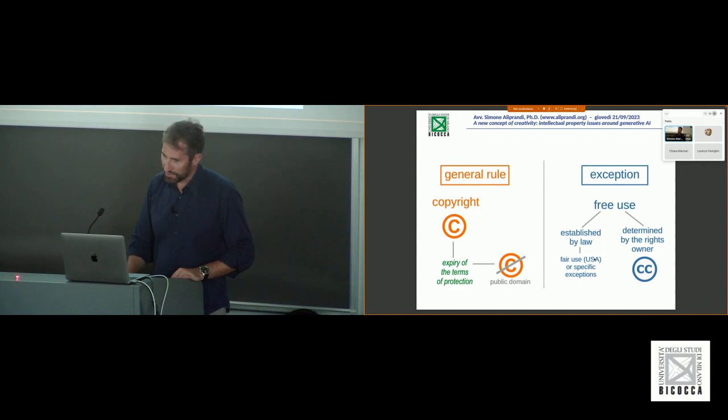If we want to have some gray scale, we have to look to the other part of my diagram with the exceptions. So the exception to the general rule is the free use, and this free use can be based on a rule made by the lawmaker, so an article of a law, or determined by the rights owner, so the source is a license.